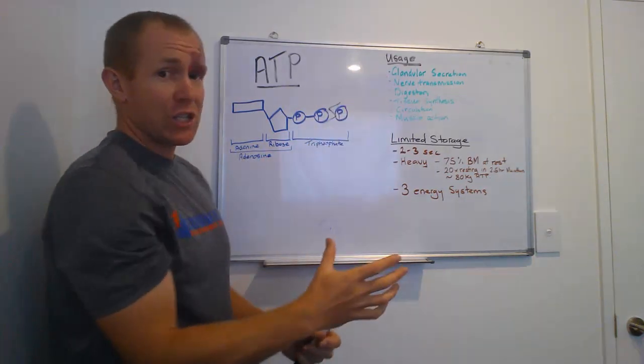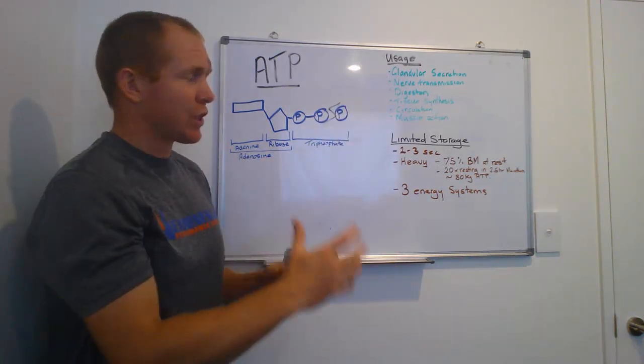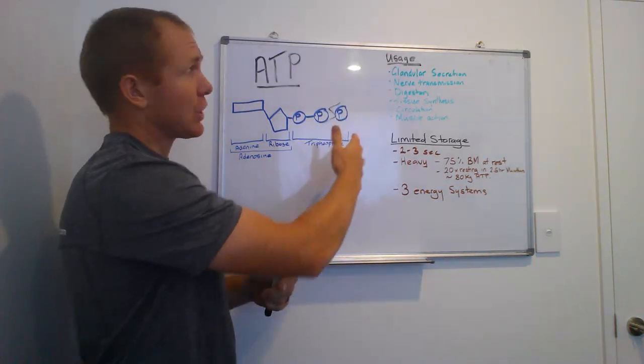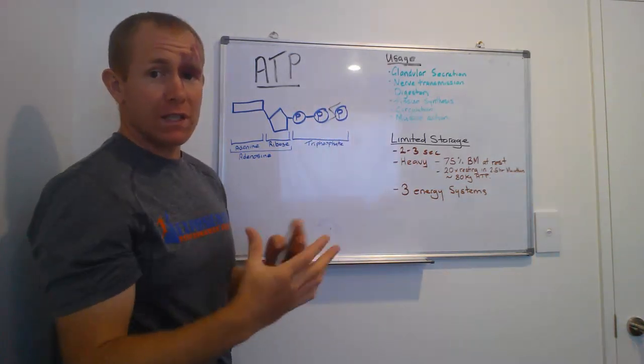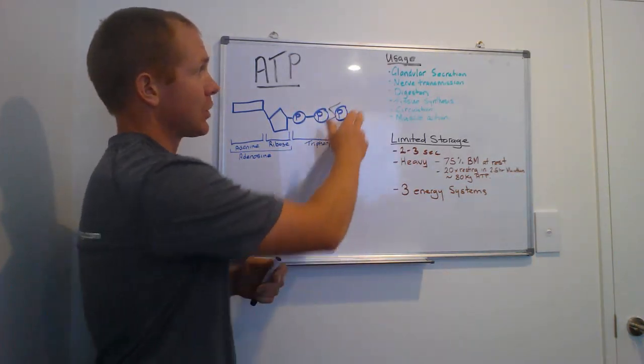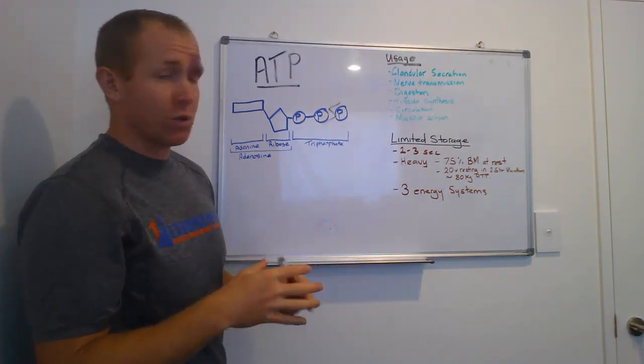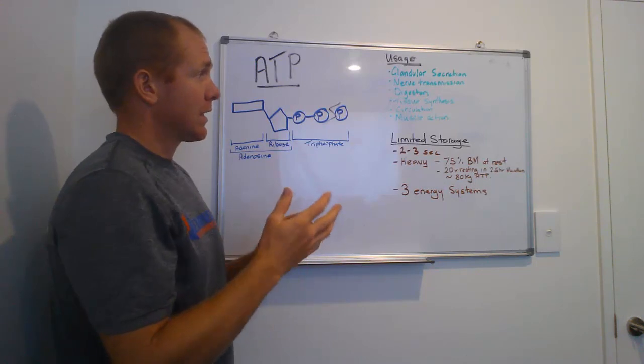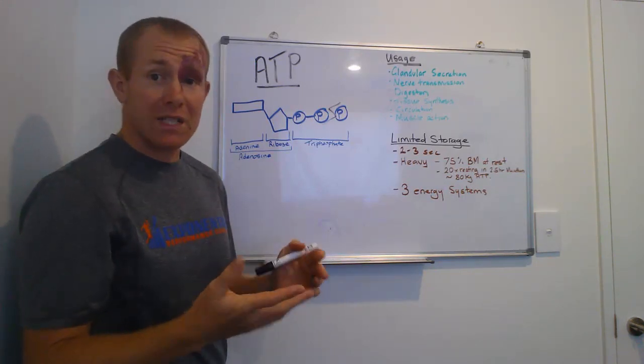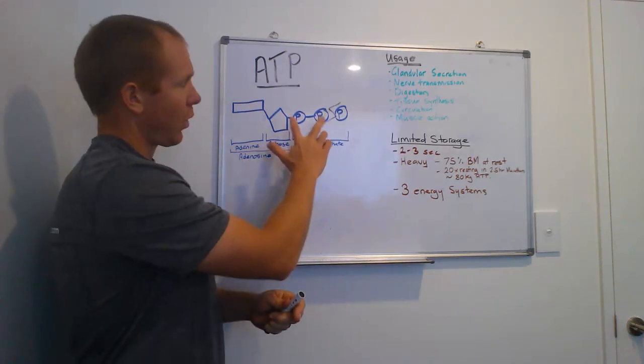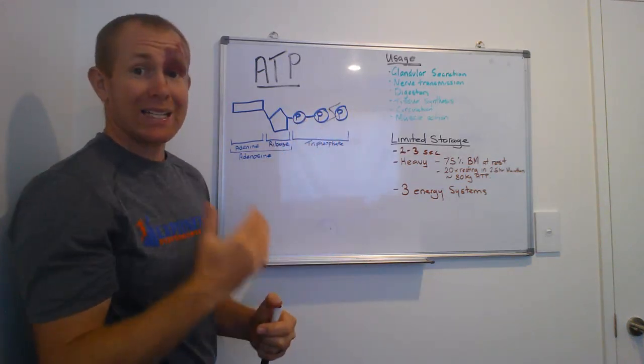And that energy is used for every single movement, action in our body. This includes glandular secretion. So the secretion of anything in our body uses ATP, uses energy. Any nerves that are firing, ATP is used. Digestion, tissue synthesis, which is the making of new tissues, circulation, and obviously muscle action.